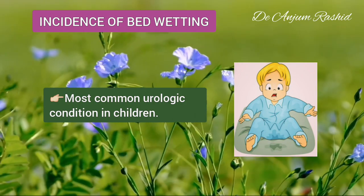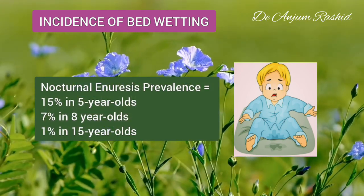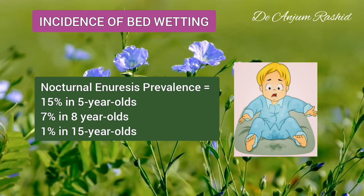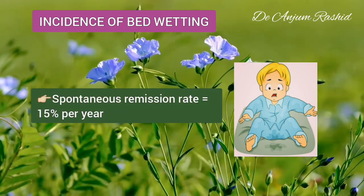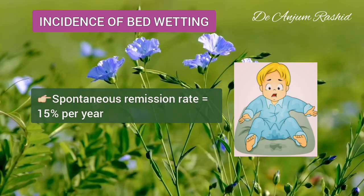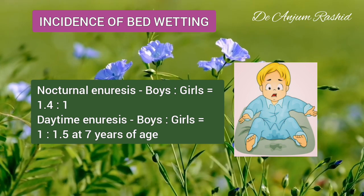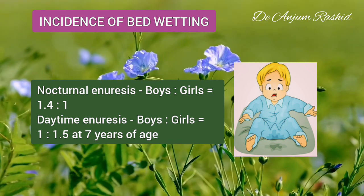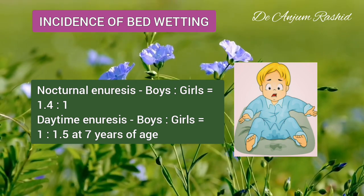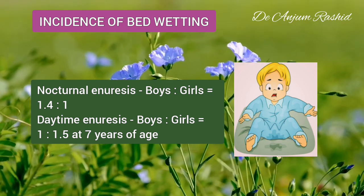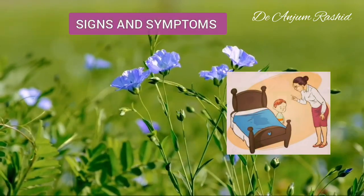Enuresis or bedwetting is the most common urological condition in children. Nocturnal enuresis has a reported prevalence of 15 percent in five-year-olds, seven percent in eight-year-olds, and one percent in 15-year-old children. The spontaneous remission rate is reported to be 15 percent per year. Nocturnal enuresis is slightly more common in boys compared with girls. The prevalence of daytime enuresis is lower than nocturnal enuresis; however, it is more common in females, with a ratio of 1 to 1.5 at seven years of age.